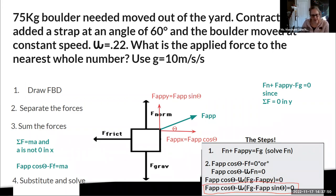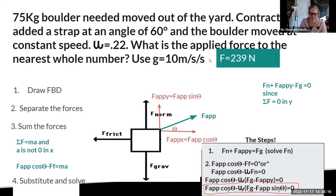Force applied is unknown. Cosine theta gives a number, mu is a number, force of gravity is a number, sine gives a number, and the equation equals zero. It's a bit of algebra: combine like terms, get force applied on one side, and divide. If you're stuck on the algebra, set up a meeting with the math teacher or with me. Make sure you have your formula sheet ready so we don't waste time looking up basic equations like force of gravity during help sessions.